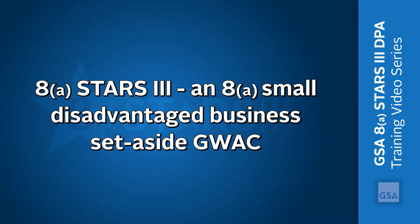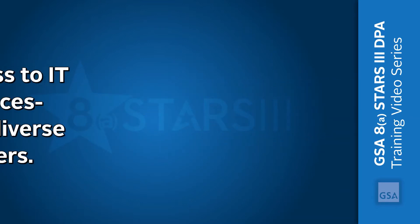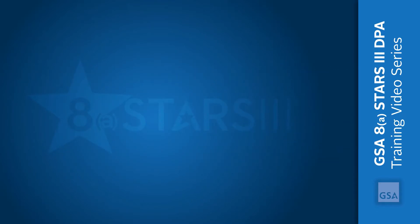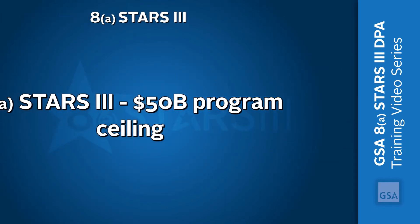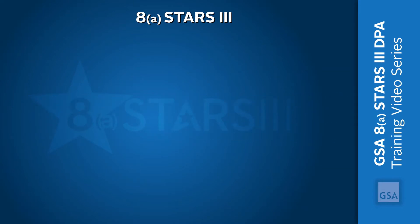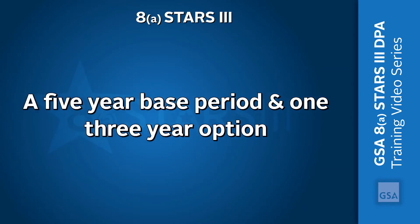8STARS III is an 8A Small Disadvantaged Business Set-Aside GWAC. It provides flexible access to IT services and IT services-based solutions from a qualified, diverse pool of 8A industry partners. 8A STARS III has a $50 billion program ceiling and a five-year base period with one three-year option.